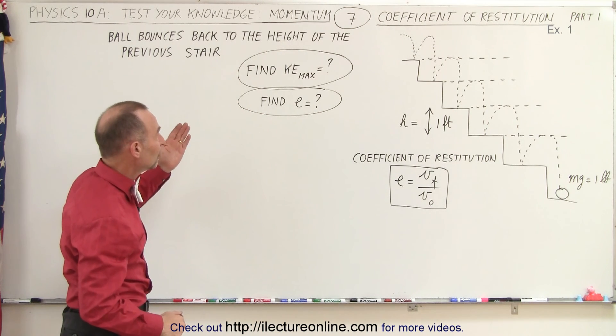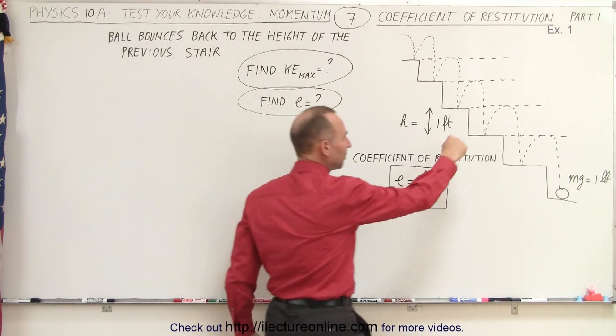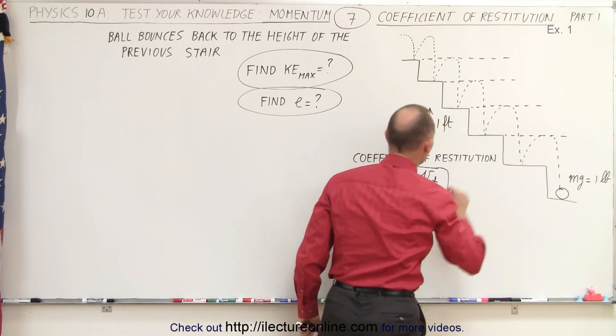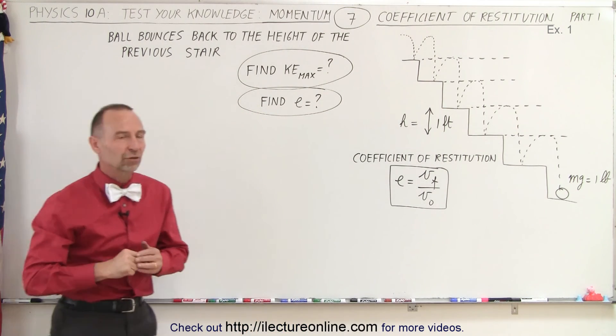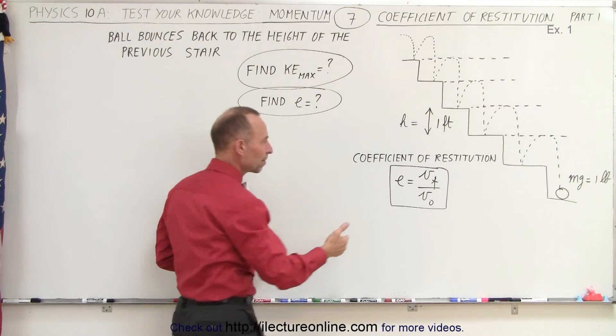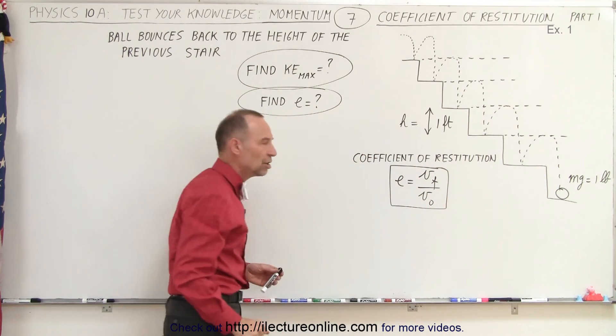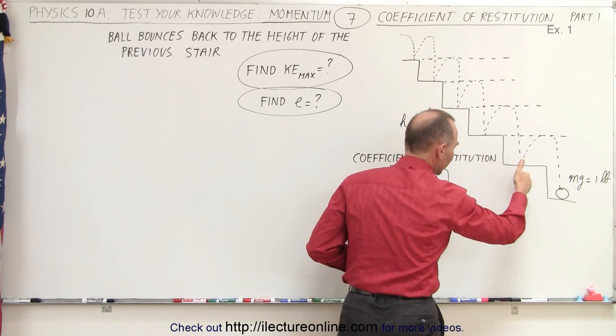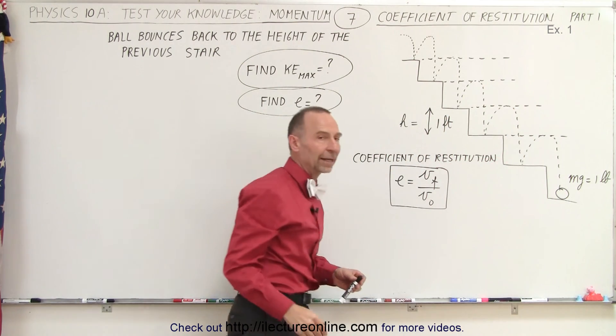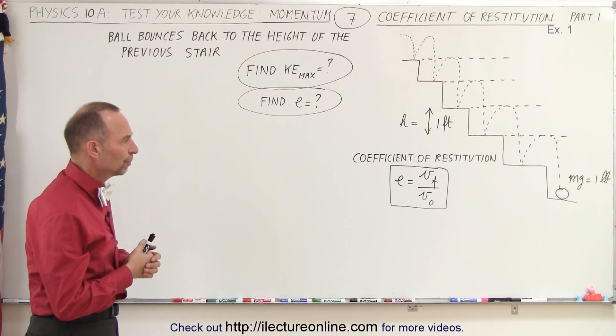We're asked to find the kinetic energy, the maximum kinetic energy of the ball at any point in time, which of course will be right before it hits the stair, and we need to find what we call the coefficient of restitution. And by definition, that is equal to the ratio of the final velocity divided by the initial velocity. In other words, the initial velocity hits the stair, and the final velocity goes back up. So how do we find the coefficient of restitution?